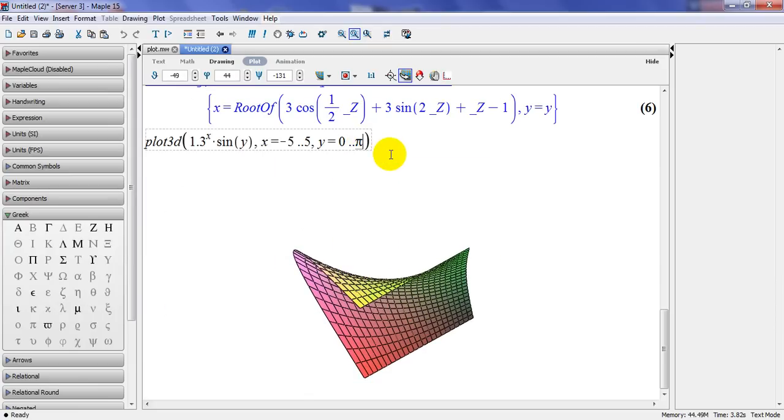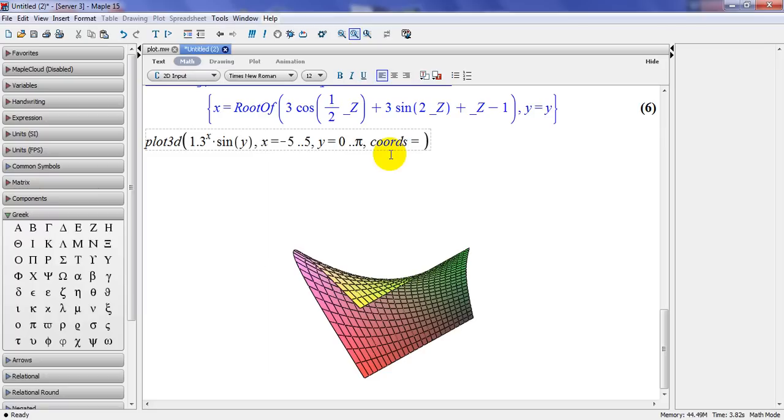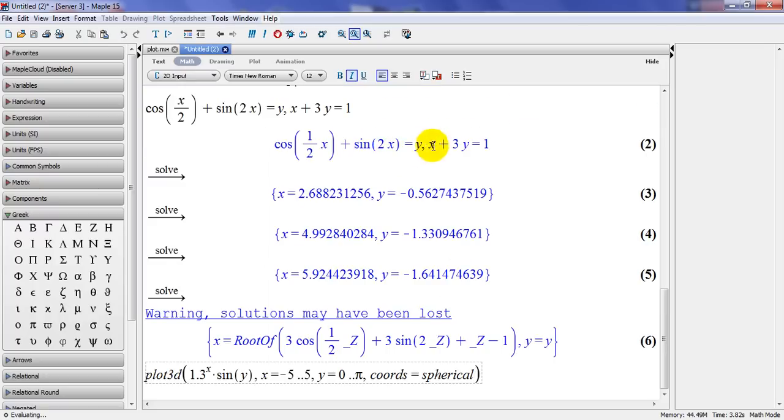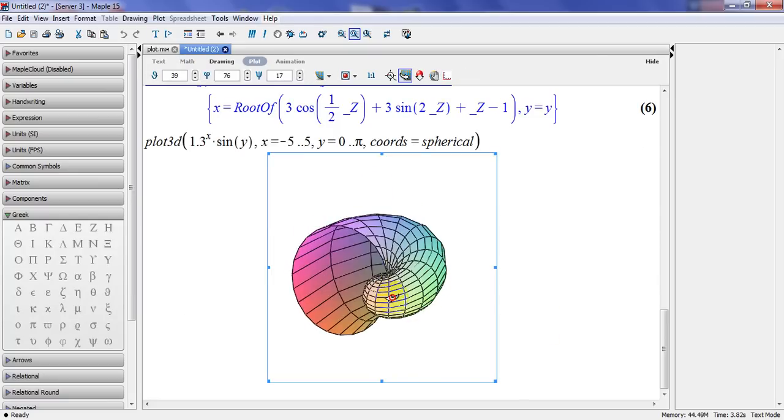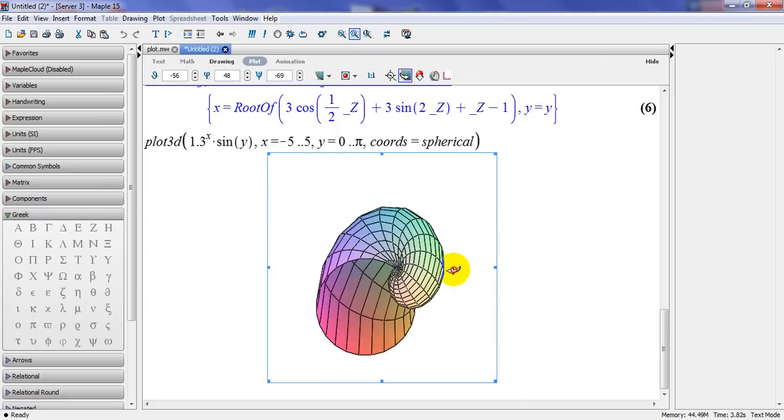Of course, I can plot this in different coordinates. So one of the coordinates is spherical coordinates. I can type here, coords equal to spherical. And this would be the outcome, the result. It looks like a seashell.